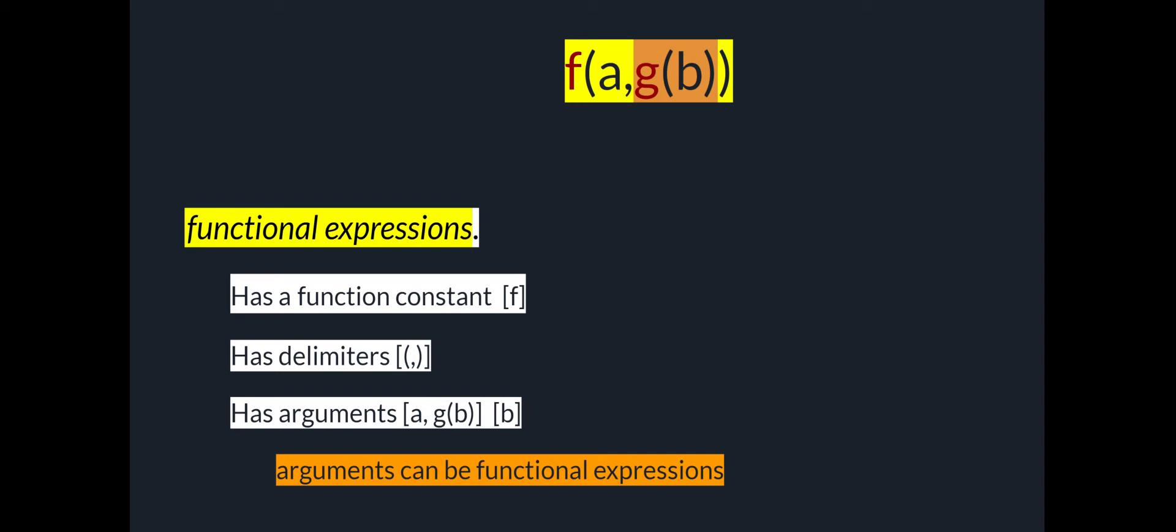It has a functional constant, which is f. It has delimiters, which are those open parentheses and commas that you see and the closed parentheses. And it has arguments, which is to say a is one argument. G of b is a second argument. And b is also an argument. B is an argument to g.